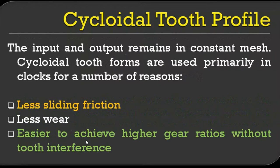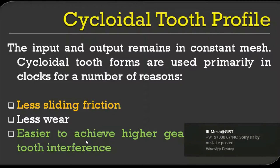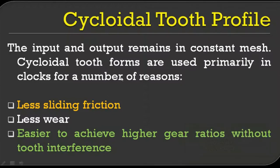The advantages of cycloidal tooth profiles: the input and output remain in constant mesh. Cycloidal tooth forms are used primarily in clocks and have several advantages. The advantages of cycloidal teeth are: less sliding friction. You have studied different types of friction — rolling friction and sliding friction. When the contact is surface contact, you get sliding friction; when contact is a point or line, you get rolling friction. Due to this, you get less amount of wear.